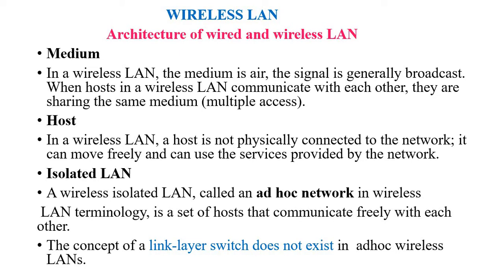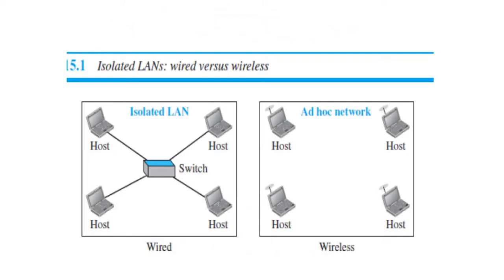A host can move freely and use the services provided by the network. An isolated wireless LAN can be called an ad hoc network. The concept of the link layer switch does not exist in ad hoc wireless LAN because each device acts as a standalone unit. In the isolated LAN we have a switch as a controller, whereas in the ad hoc network there is no controller.